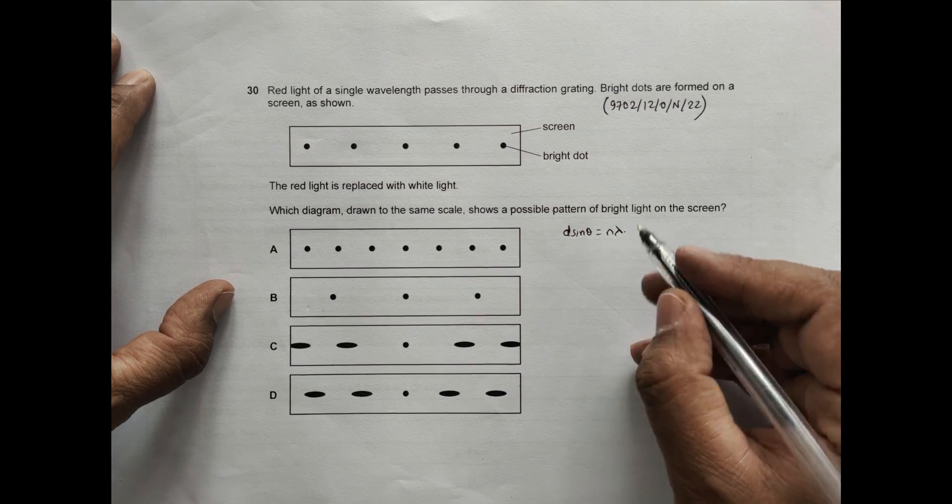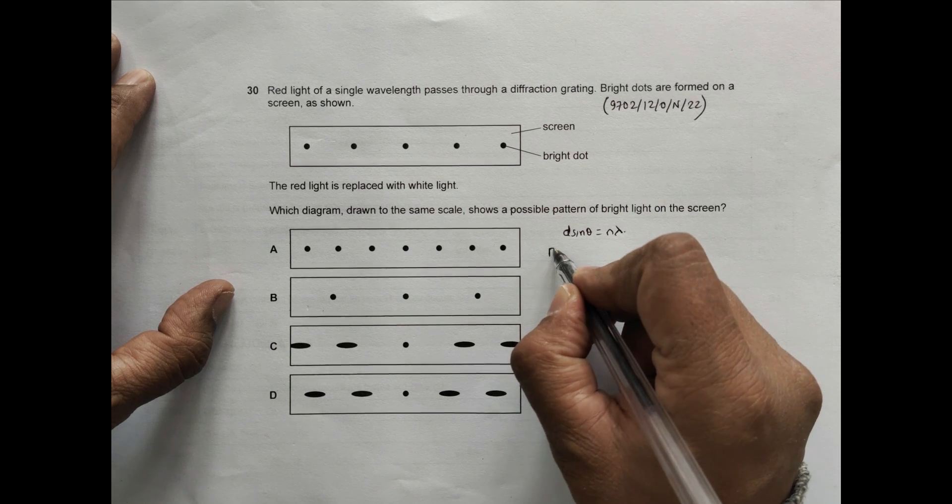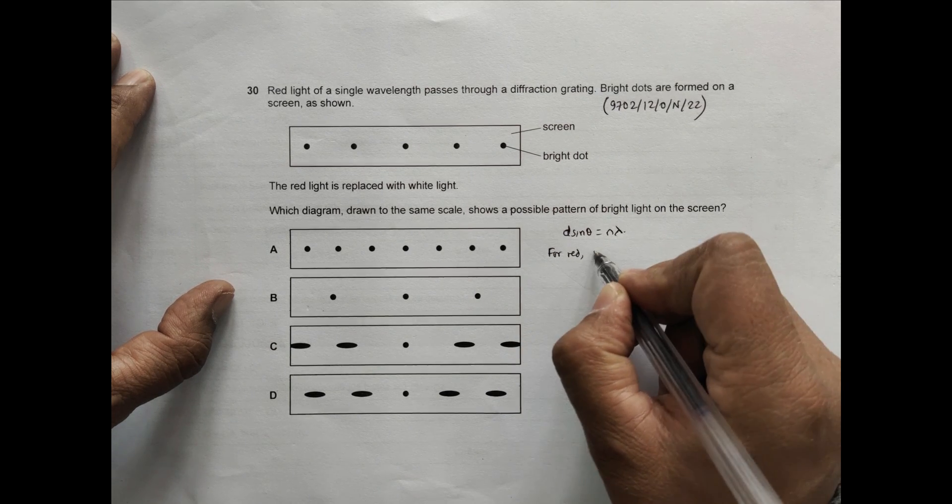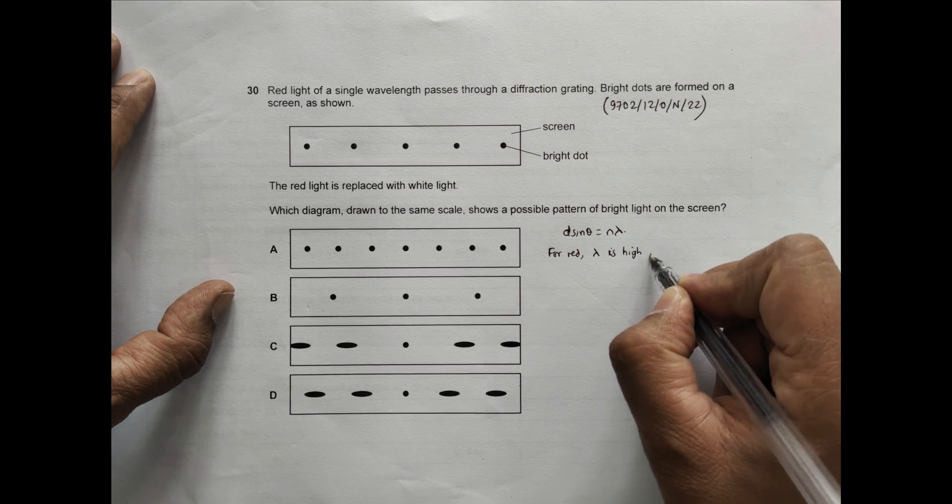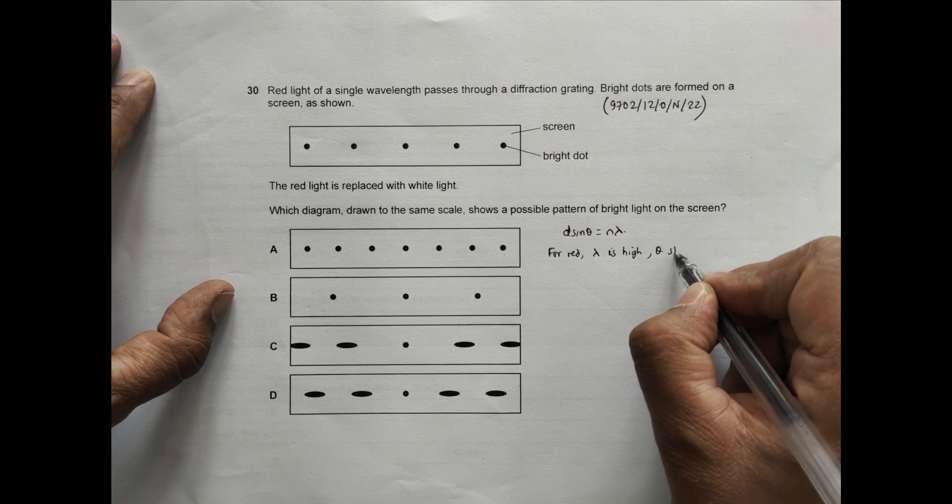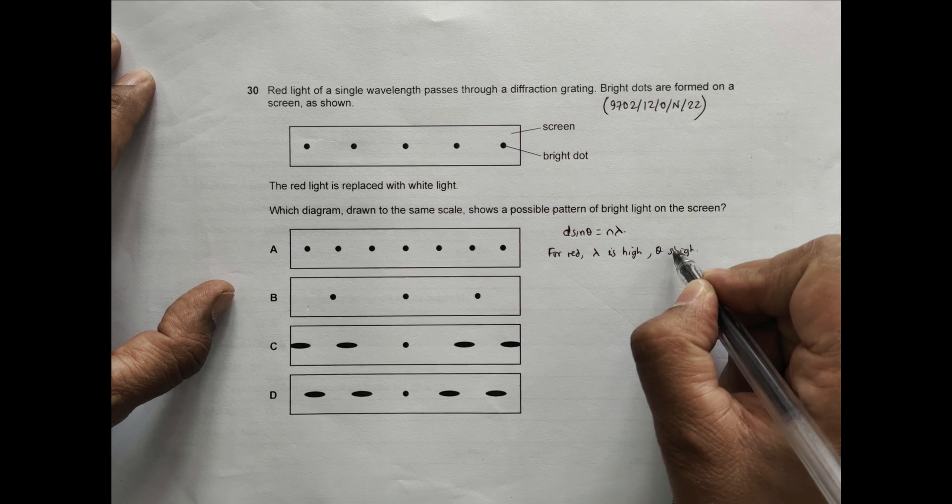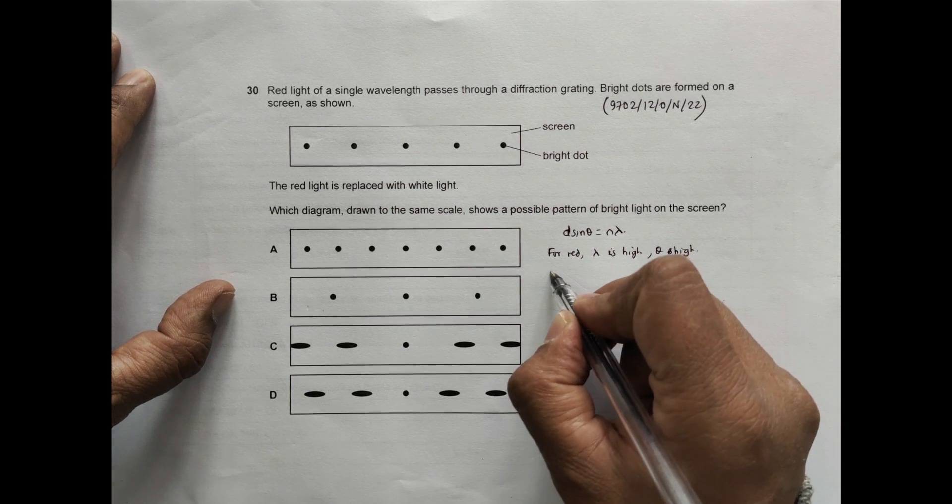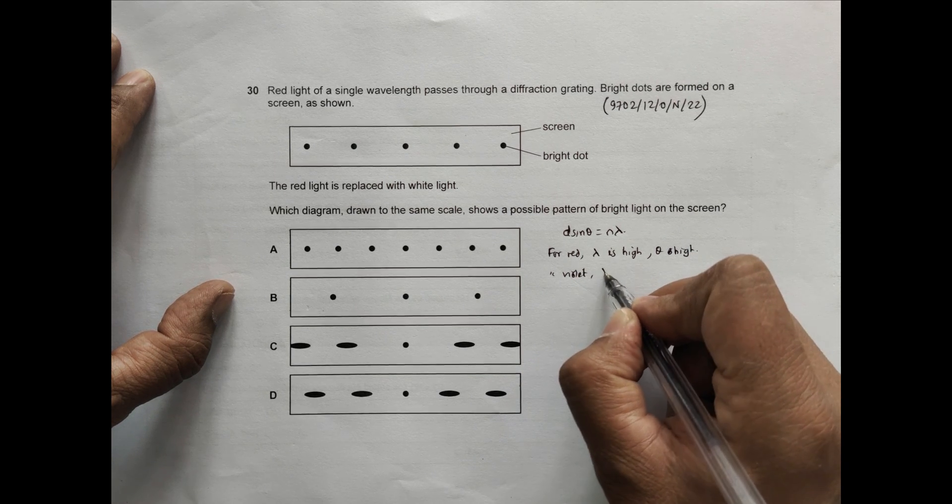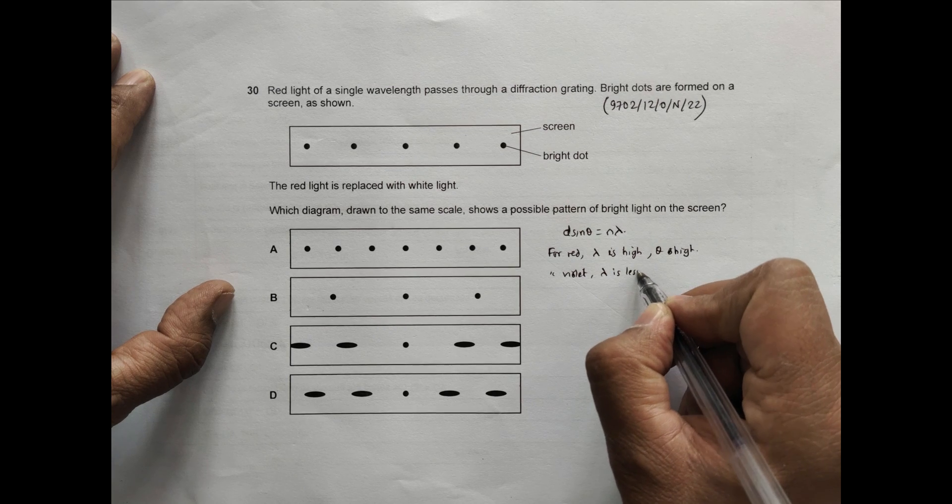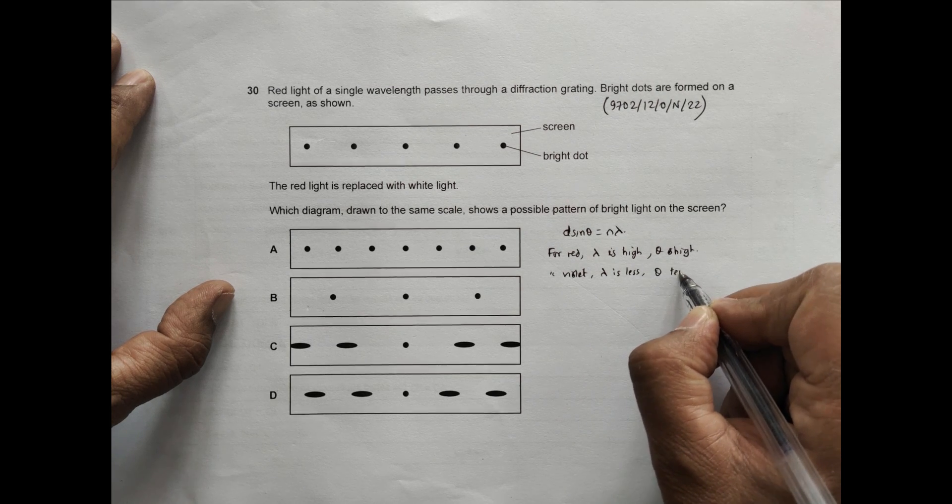For red, lambda is high, so theta should be high. And for violet, we should have lambda is less, and theta should also be less.